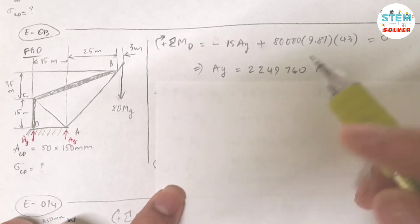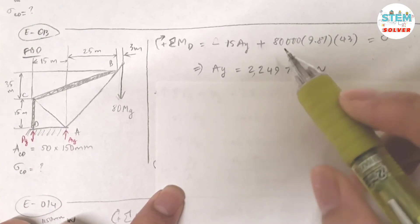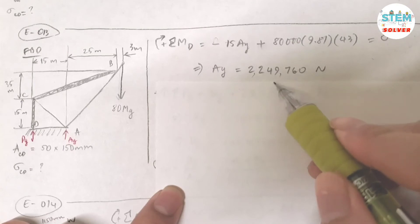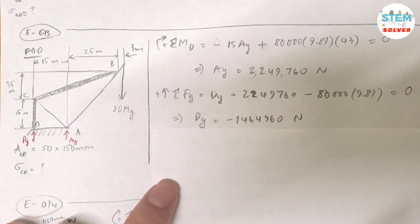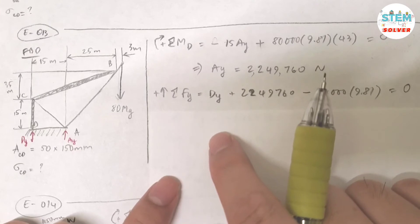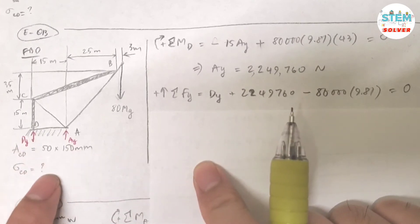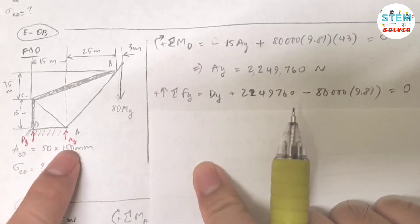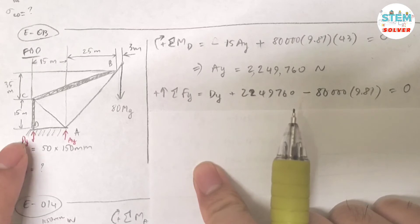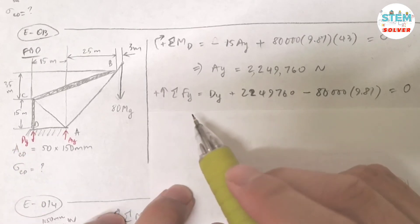So 2,249,760 newtons. Now let me take a summation about Y. So I know AY and there's only DY left. So I can solve for DY using the summation of FY.